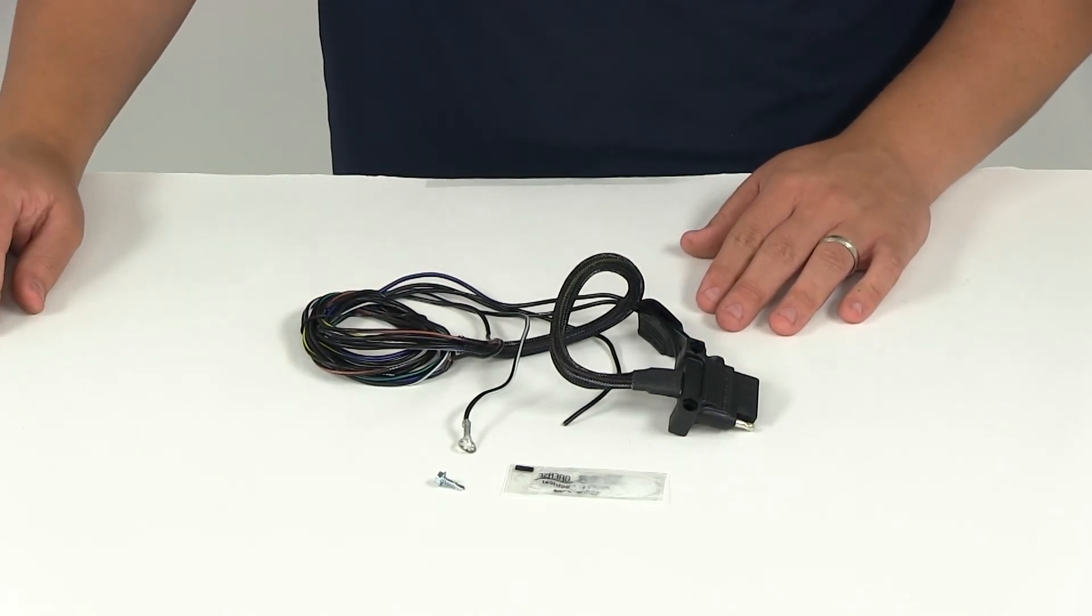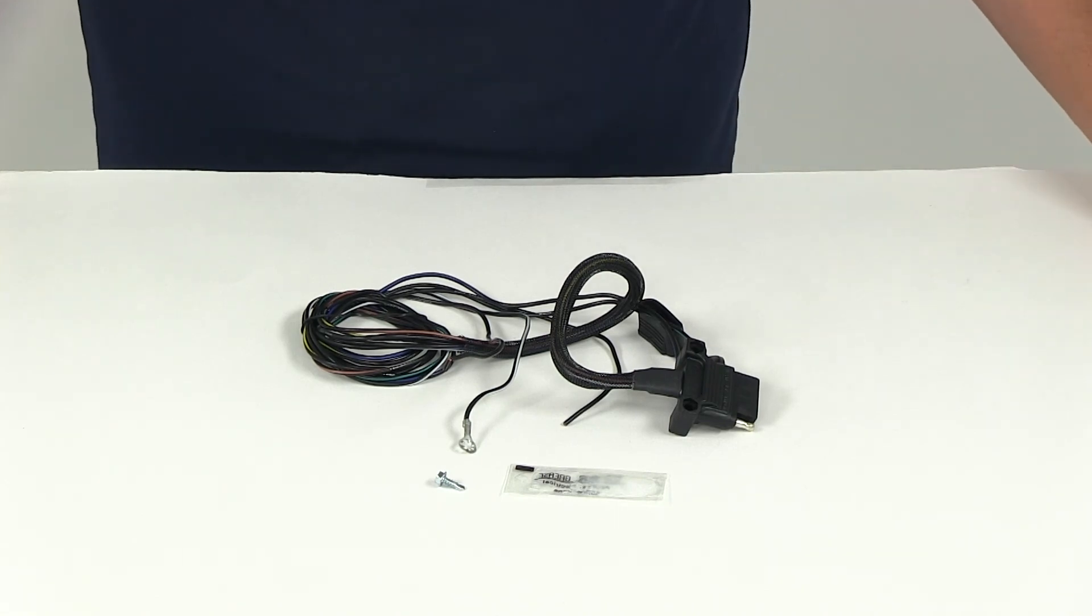That does it for today's review of part number HM47900, the Hopkins Endurance five-way flat trailer connector.